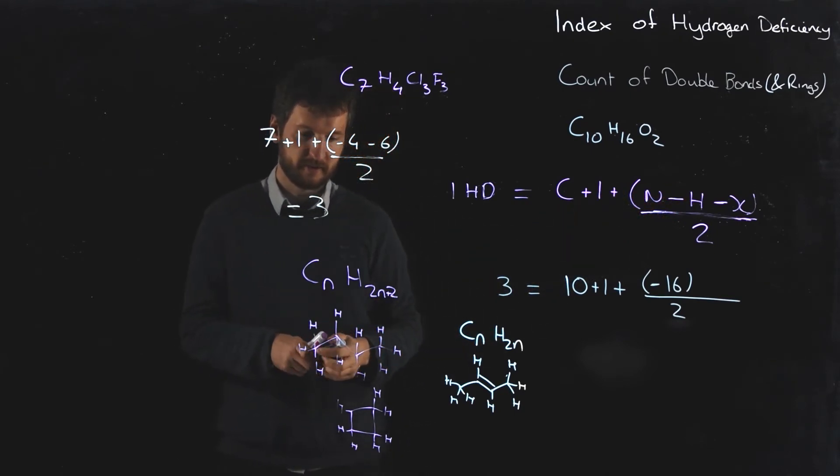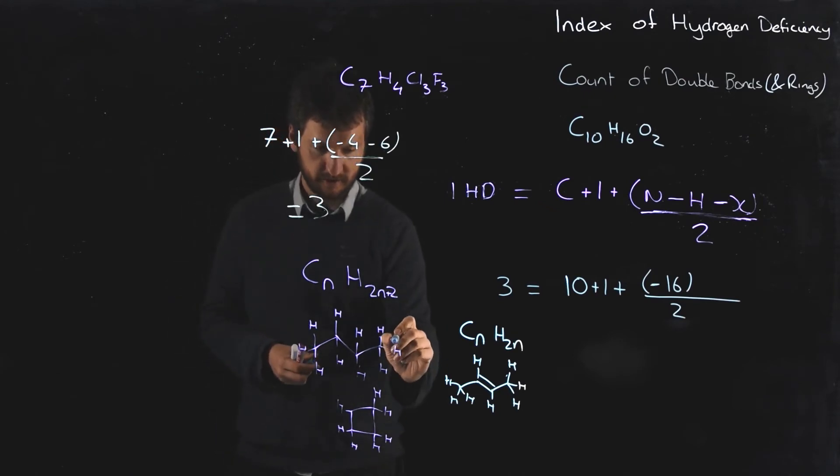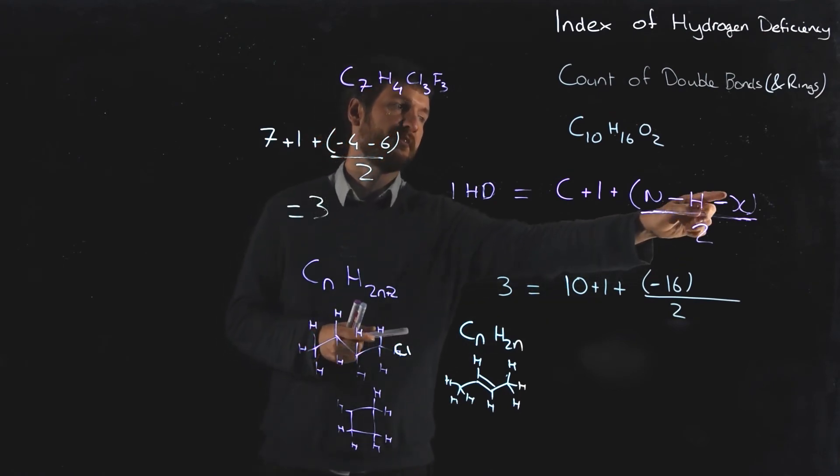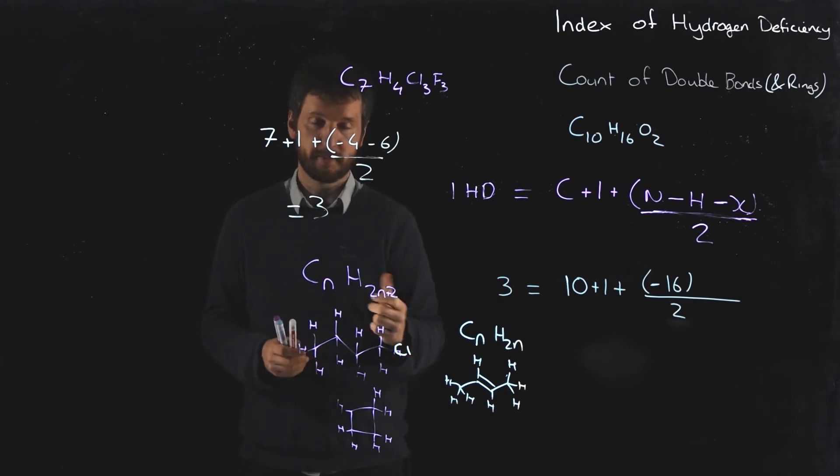What about the halogens? Well, if you put in a halogen - if we replace this hydrogen here and say, well, what if that was chlorine - the halogens only form a bond to one other element, so they act exactly the same as the hydrogen. Which is why we take away the hydrogens and the halogens. It doesn't matter whether it's chlorine, iodine, bromine, or fluorine.